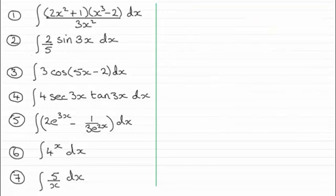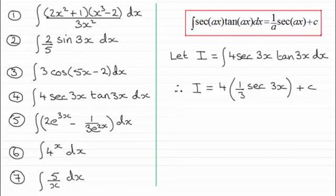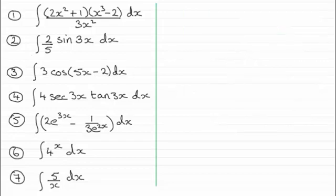Now for number 4, the integral of 4 sec 3x tan 3x with respect to x uses this standard integral. And you can see that if we let i equal that integral, then we've got a as taking on the value 3. So you've got 4 times this result here, 4 times 1 third sec 3x, which is going to give you 4 thirds sec 3x.